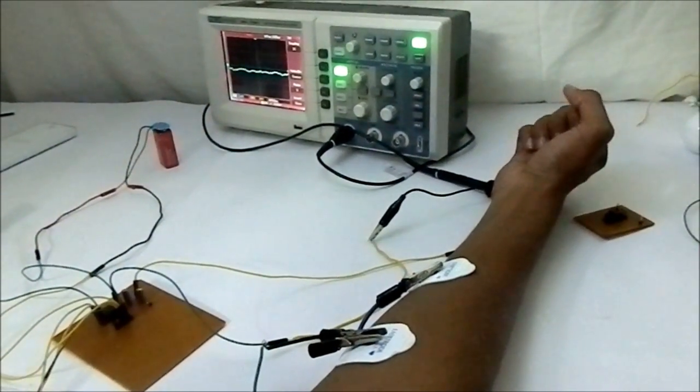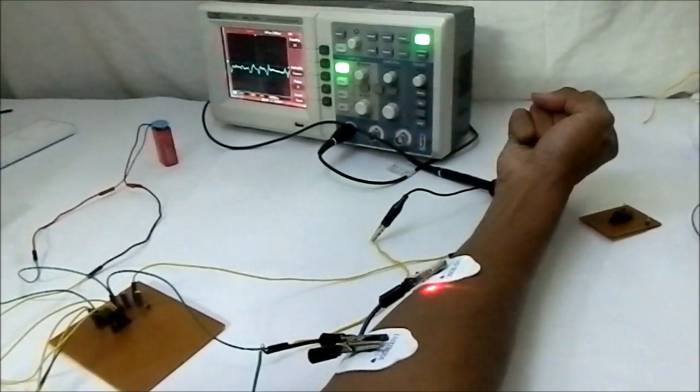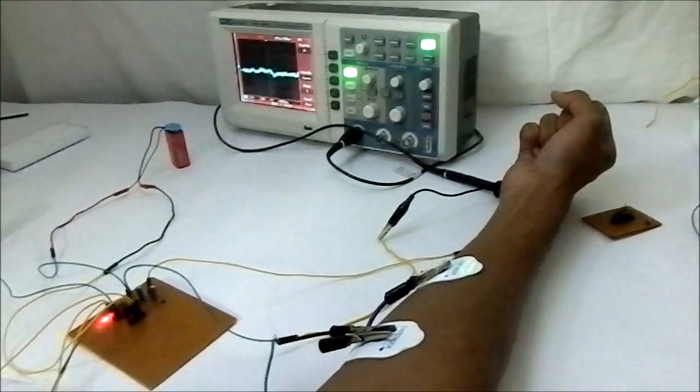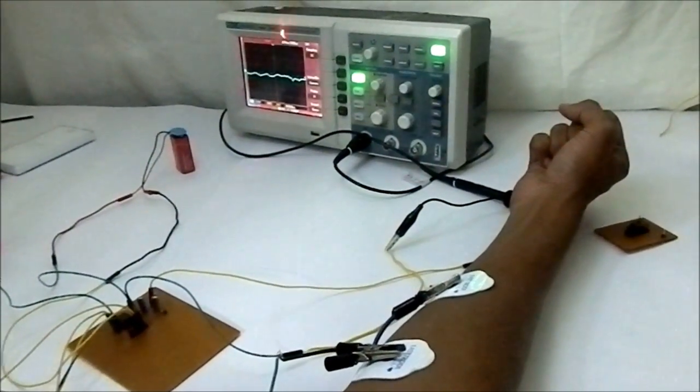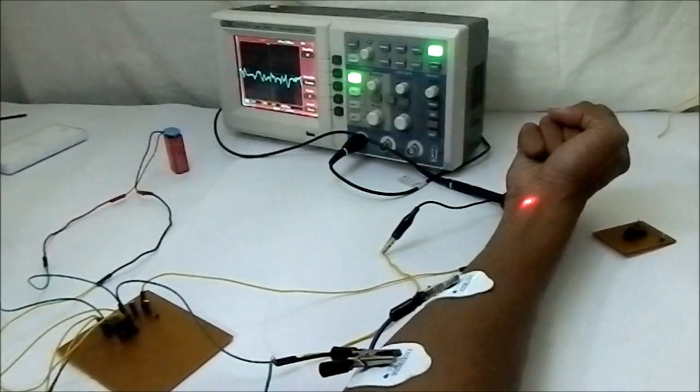Coming to the EMG signal extraction part, the voltage difference between the two electrodes is amplified through the EMG conditioning circuit. Now you can clearly observe the consequence of muscle contraction in the CRO.